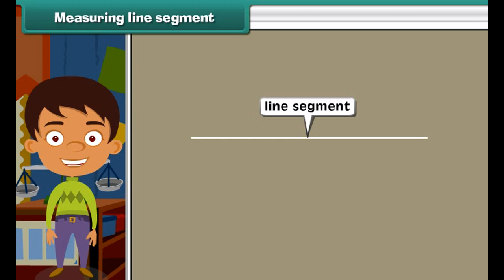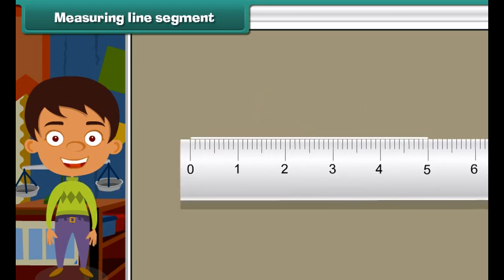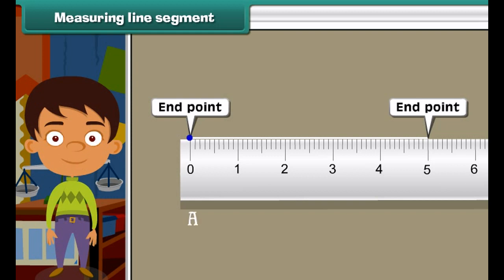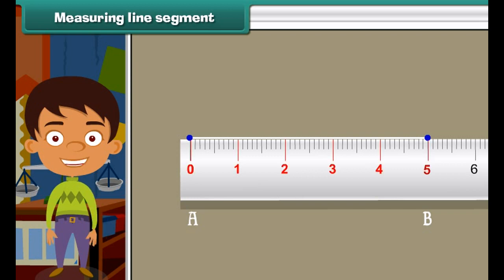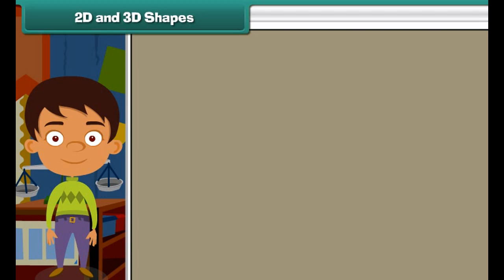Measuring line segment. It's time that we learn to measure a line segment. To measure the line segment AB, we use a centimeter scale. Put one end of scale starting with zero just below the point A. On going from point A to B, digits zero, one, two, three, four, and five are traveled. Therefore, length of the line segment is five centimeters.